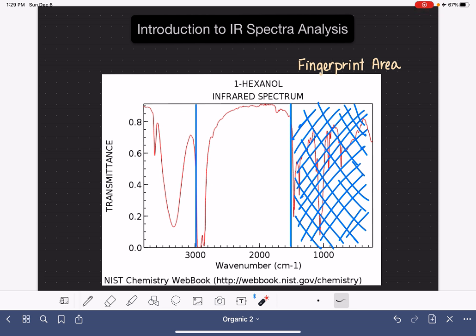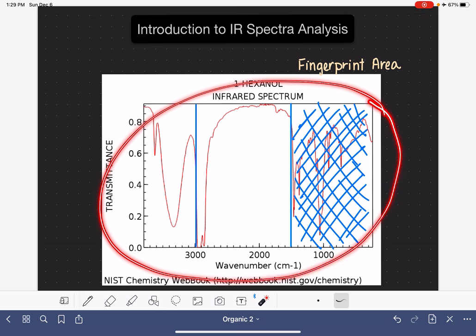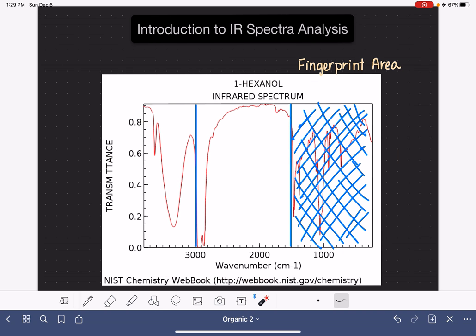I do want to say, as a side note, if you are matching spectra, so let's say you have this particular spectrum right here that you're looking at and you're trying to match it to a reference, then typically in that situation, we do want to focus on the fingerprint area and match the fingerprint areas of a spectrum to a reference spectrum. That matching process, we do rely heavily on fingerprint.